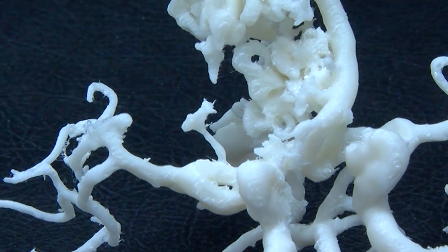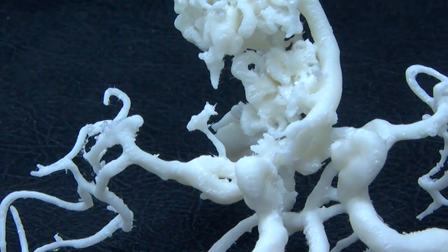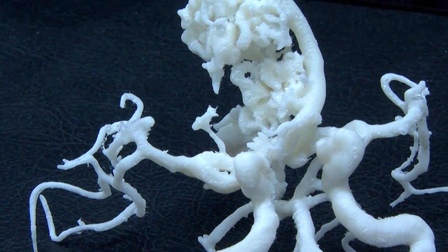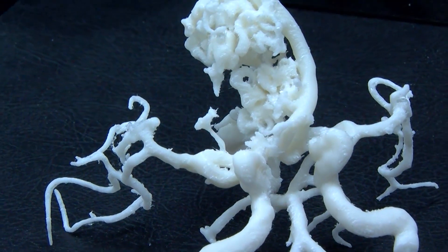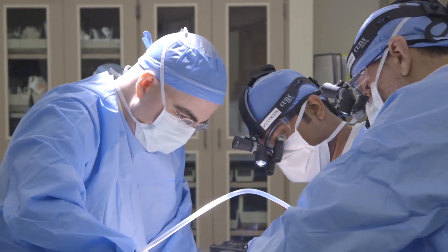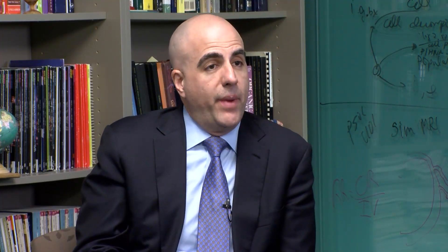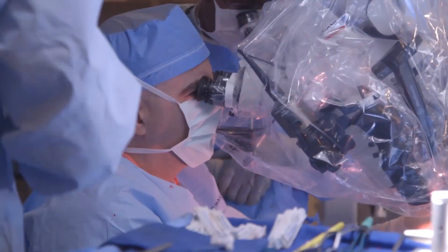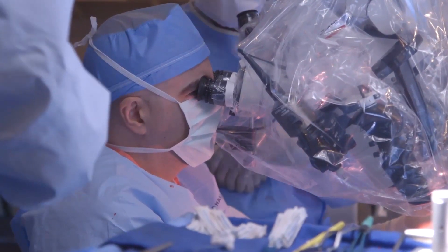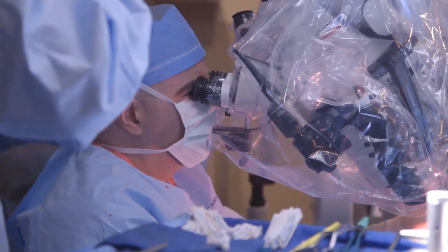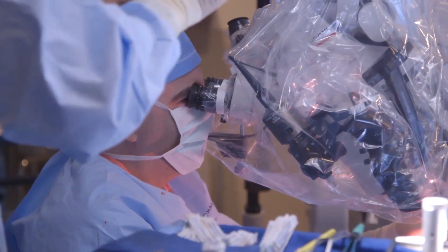Just like snowflakes, there are no two AVMs that are the same — every AVM is different, and our treatment plans have to be uniquely designed to match the needs of the patient. Treatment options for AVM include microsurgery, where through a cranial opening and using the operating microscope, we can look at the anatomy of the AVM, disconnect the abnormal arteries from the surrounding circulation, and remove the AVM.